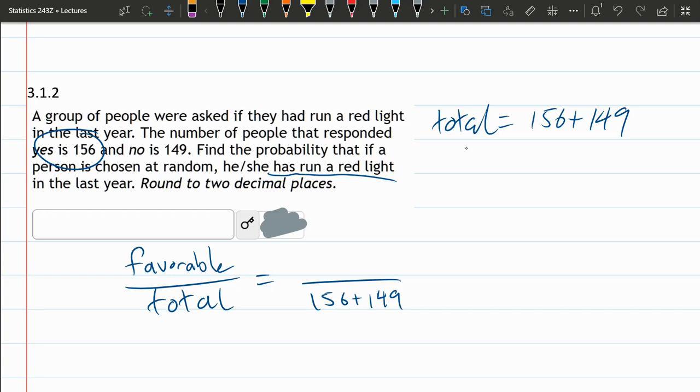So if we chose a random person, what's the probability that they'd be a yes, which is 156 divided by the total? And all you need to do is put this into a calculator and get a decimal out.